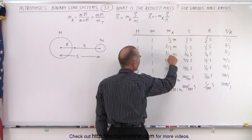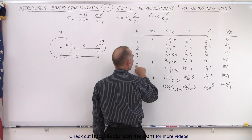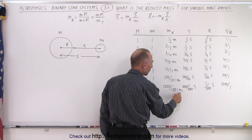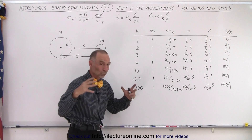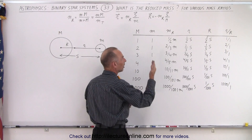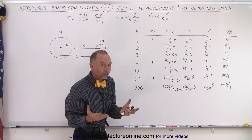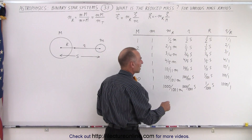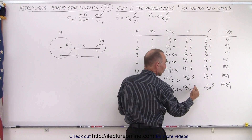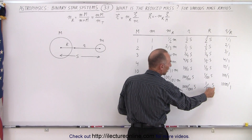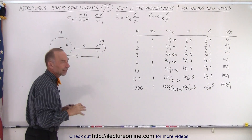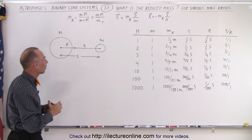Notice that the reduced mass continues to increase as the large mass becomes larger with respect to the small mass. You can see that the reduced mass gets closer and closer to the value of the small mass. When the large mass becomes really large relative to the small mass, the reduced mass approaches one times the mass of the small mass — the reduced mass and the small mass will essentially be the same. Notice that the radius of the orbit of the small mass also becomes almost equal to the total distance between the two masses, and the radius of the orbit of the large mass becomes very tiny as the barycenter begins to move inside the volume of the large object.